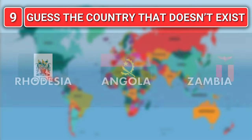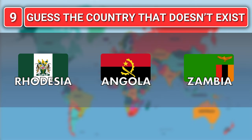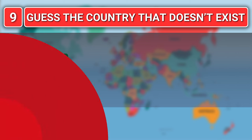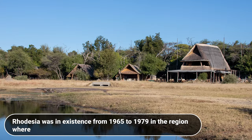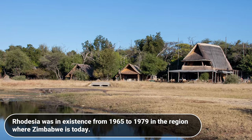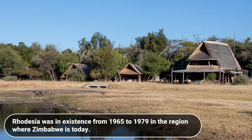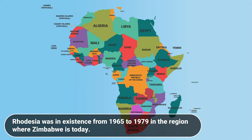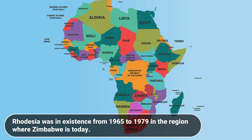Which one does not exist? Rhodesia, Angola or Zambia? Rhodesia was in existence from 1965 to 1979 in the region where Zimbabwe is today.